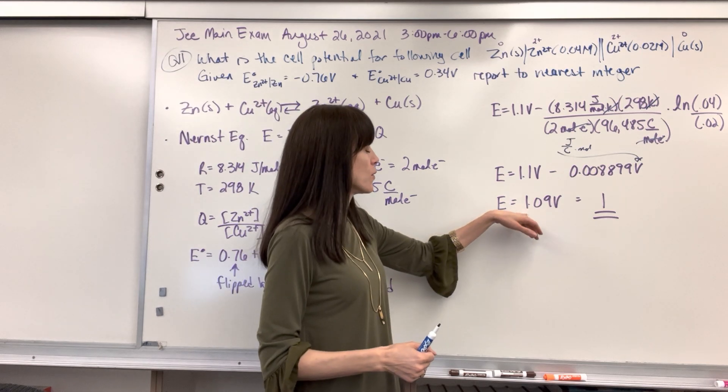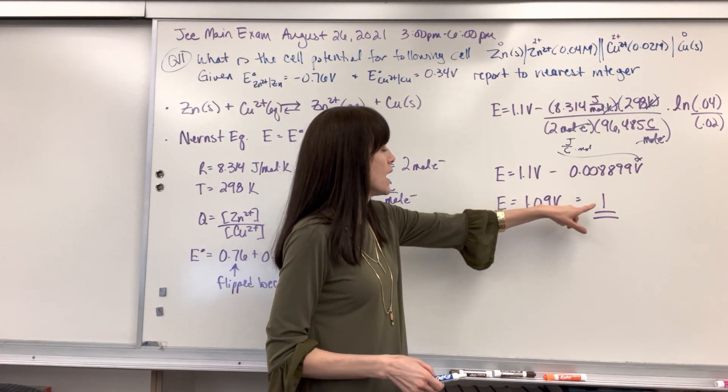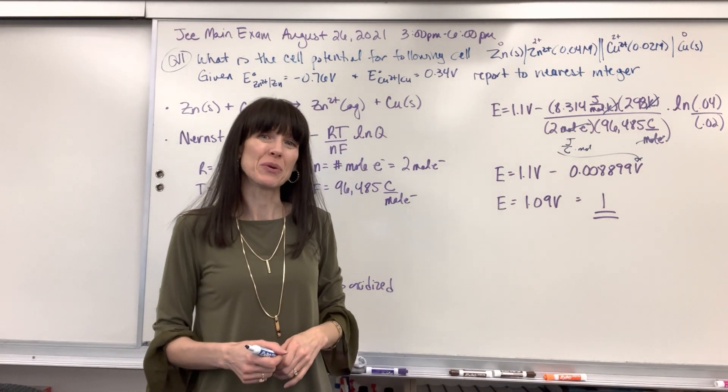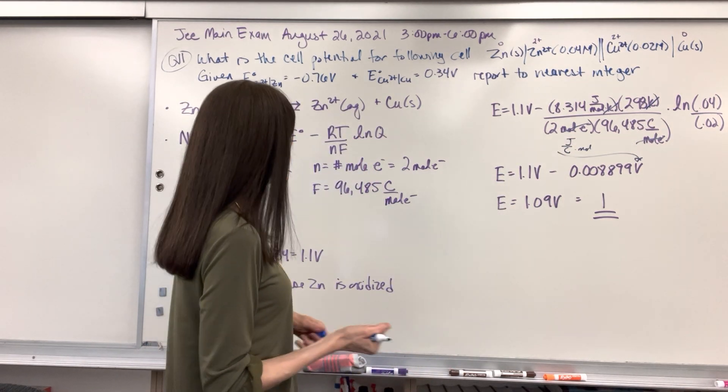So when you put this math in, you get 1.09 volts. So this potential, they wanted us to round to the nearest integer, is going to be a one.